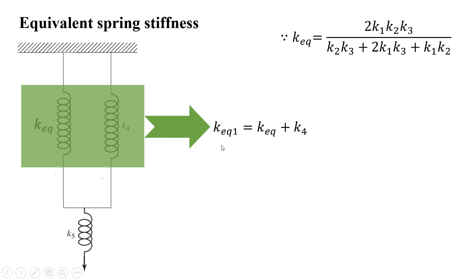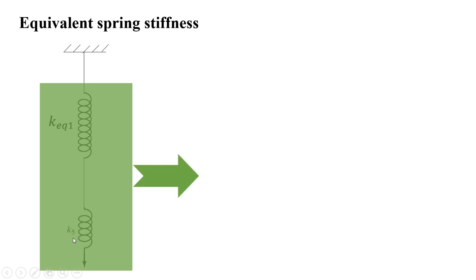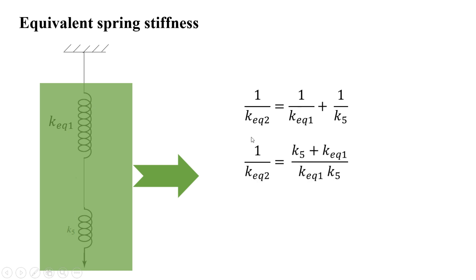This k_equivalent is now in parallel with k4, so the combined stiffness is k_equivalent1 = k_equivalent + k4. Then k_equivalent1 is in series with k5, giving 1 upon k_equivalent2 = 1 upon k_equivalent1 plus 1 upon k5, which simplifies to k_equivalent2 = (k_equivalent1 · k5) divided by (k5 + k_equivalent1).